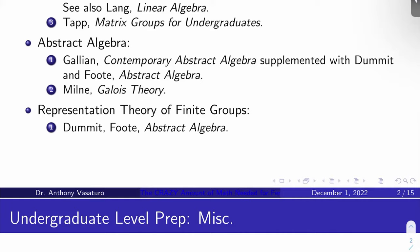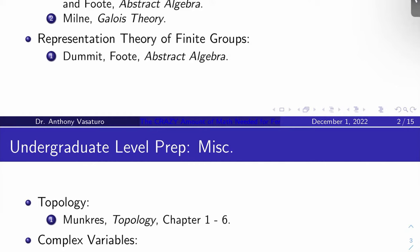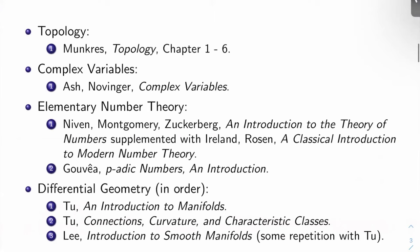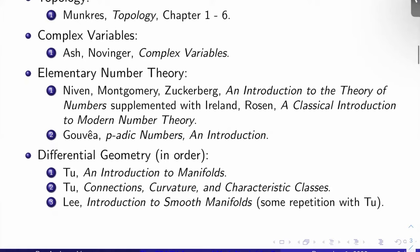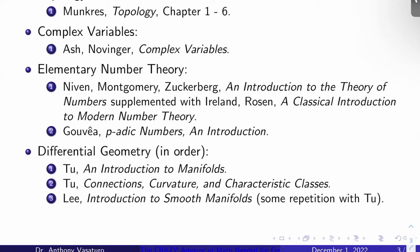You're going to need to know the basics of representation theory of finite groups. I like Dummit and Foote's chapters on that. You're going to need to know point set topology quite well. Munkres's Topology, especially the first six or seven chapters, is the place to be for that. You're going to need a good complex variables course in preparation for complex analysis. Ash Novinger Complex Variables is the place to go for that, although there are a ton of other books.